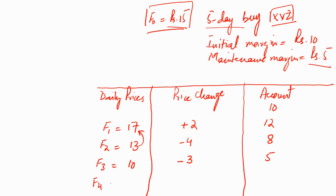The price further fell to 8 rupees on day 4 — again a 2 rupee decrease from the previous day. We write minus 2 in the price change column and the margin account now comes to 3 rupees. You can see that the margin has fallen below the maintenance margin requirement of 5 rupees, and this is where we receive a margin call from the broker. We have to refill the account and bring it back to the initial margin of 10 rupees.